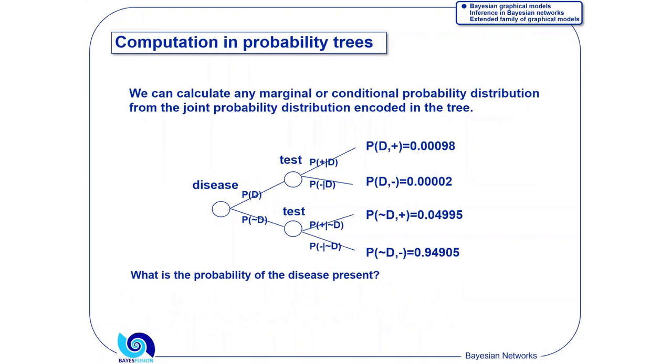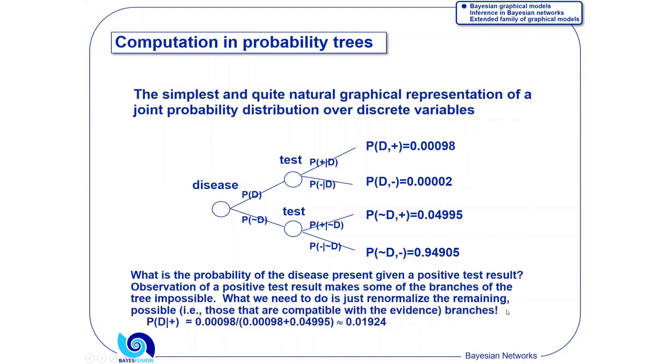When you have that representation, you can perform calculations. For example, you can ask, what is the probability of the disease present? Very easy calculation. Just add up those two branches of the tree that are compatible with probability of the event disease present. A harder calculation: what is the probability of the disease present given a positive test result?